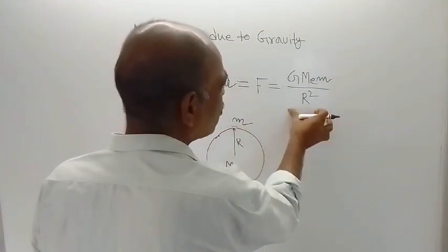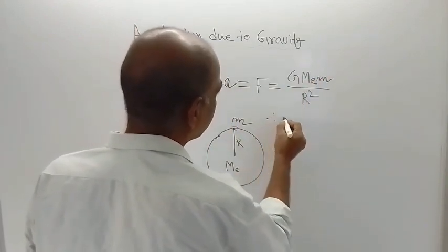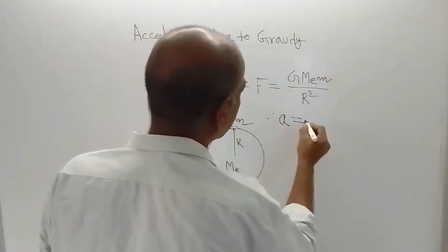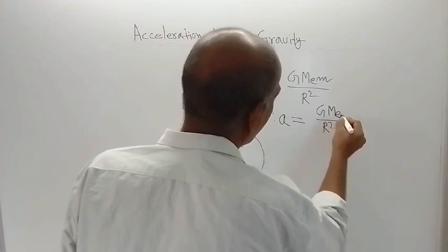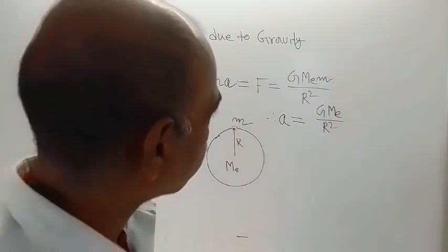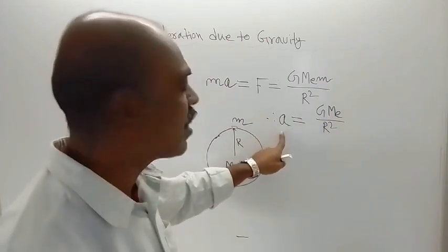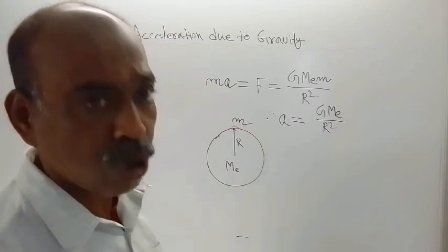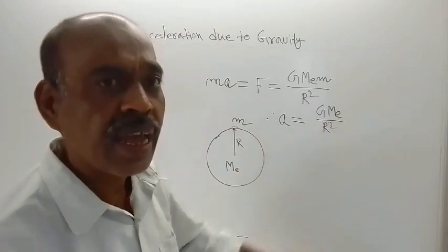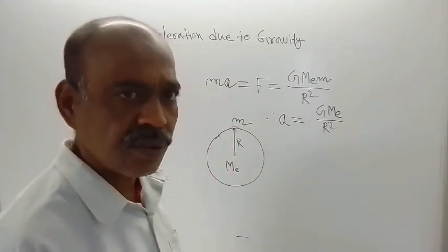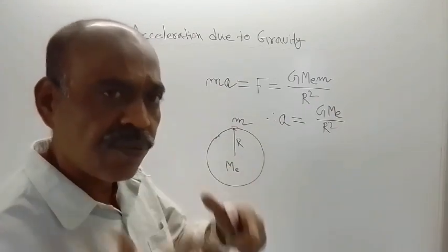So equating the two expressions, this m and that m cancel. Therefore, a is equal to G·Mₑ divided by r². This is the acceleration of the small object, not of the earth. This acceleration is called acceleration due to gravity, because we obtained this acceleration due to the gravitational force.